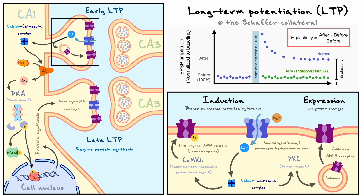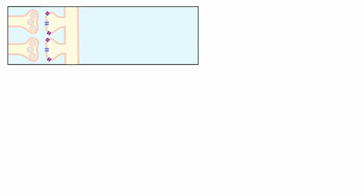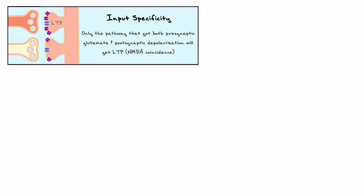The baseline responses before the tetanus were sub-threshold EPSPs not sufficiently strong to generate a change in synaptic strength. To get LTP to occur, it is required that the presynaptic and postsynaptic partners both get very depolarized within a short amount of time. In an experimental setting, we can achieve this by stimulating the CA3 and CA1 neurons together. When we consider a control pathway that is not stimulated alongside the stimulated pathway, LTP only occurs at the site where both the presynaptic and postsynaptic sites were stimulated. This property is known as input specificity, and it can be explained by the NMDA receptor mechanism: since the NMDA receptor requires both glutamate binding and postsynaptic depolarization, only the pathway where both requirements are met will cause LTP.